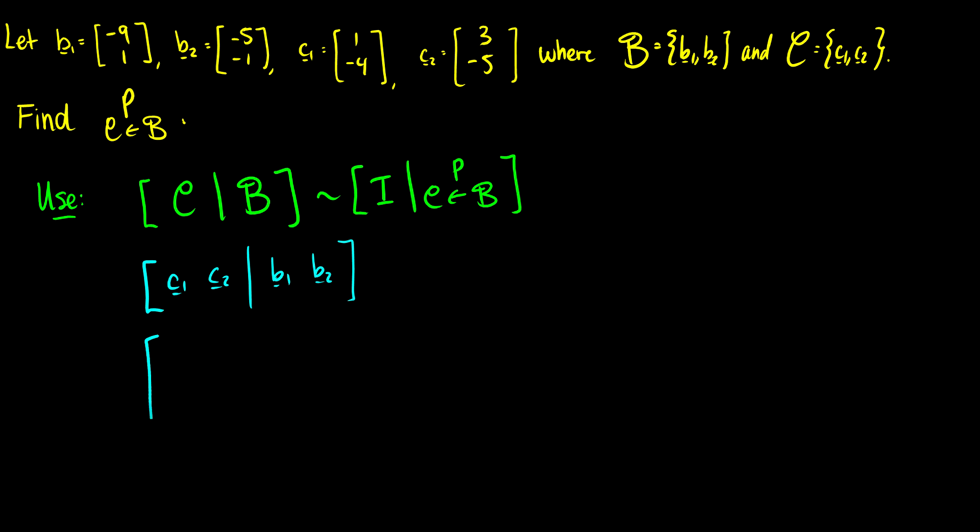So let's just put these in here. So c1 is going to be 1, negative 4. c2 is going to be 3, negative 5. I'm going to keep the line in the middle just for the sake of it. b1 will be negative 9, 1, and b2 will be negative 5, negative 1. Okay, so the first row looks good. 1, 3, negative 9, negative 5.